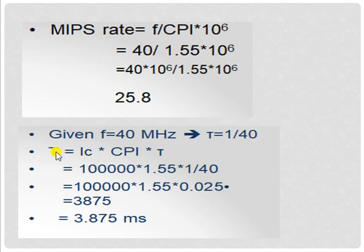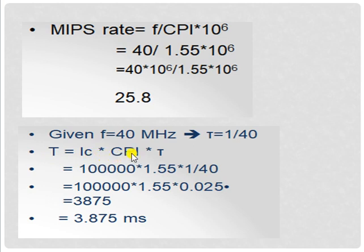Next, compute the time taken for executing the program. F = 40 MHz, so TOR = 1/F = 1/40. T = IC × CPI × TOR = 1,00,000 × 1.55 × (1/40). After computation we get T = 3.875 ms. So the total time taken for executing the program is 3.875 ms. This is the solution to the problem.